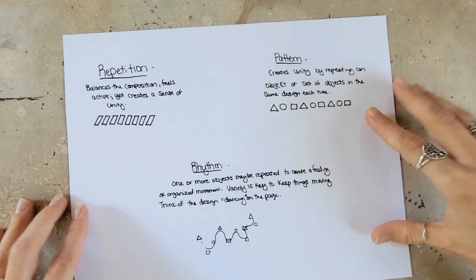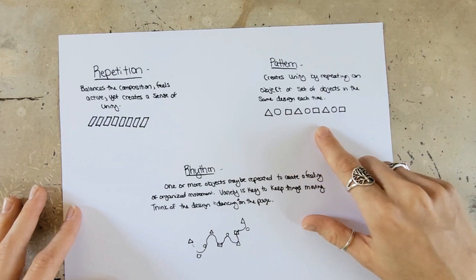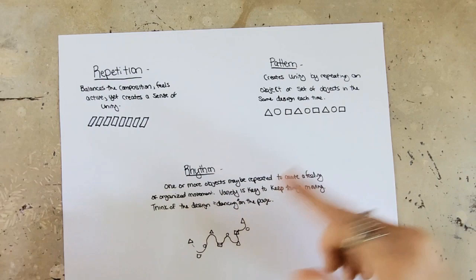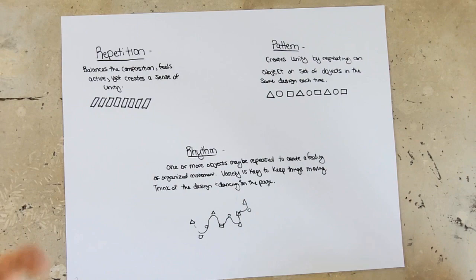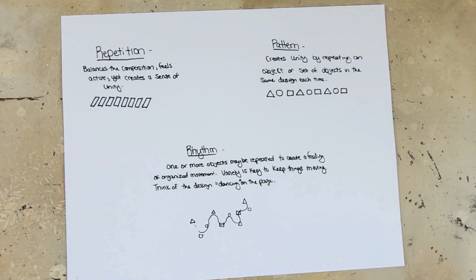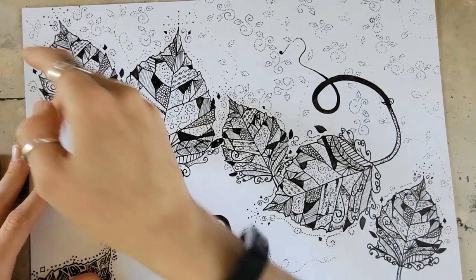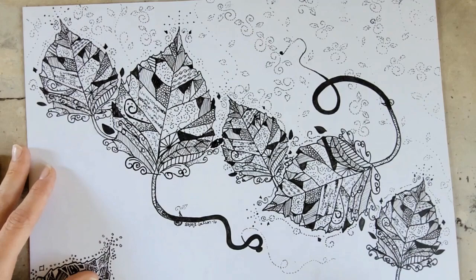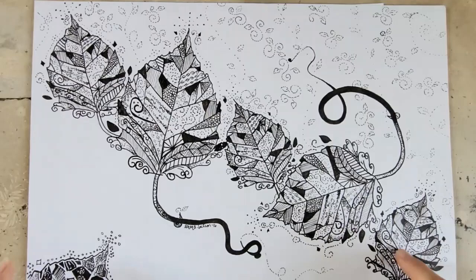Pattern and rhythm also deal with repetition. Pattern creates unity by repeating an object or set of objects in the same design each time. Rhythm is one or more objects that may be repeated to create a feeling of organized movement — variety is key here to keep things moving, thinking about things dancing on the page. I find this easier to see in something more illustrative than realistic, but you will have rhythm in realism as well. The different way I'm moving the leaves creates some rhythm, along with the design elements on the outside and how I did the curly cues.